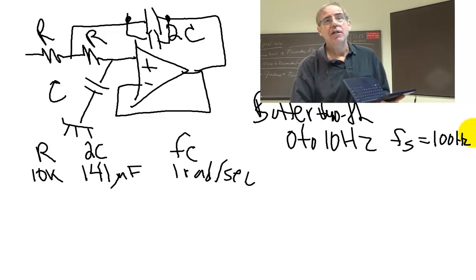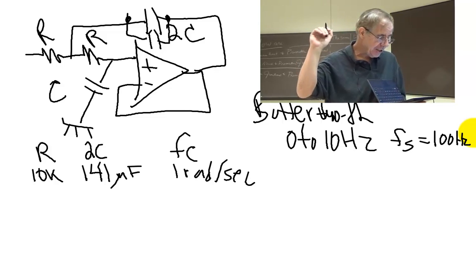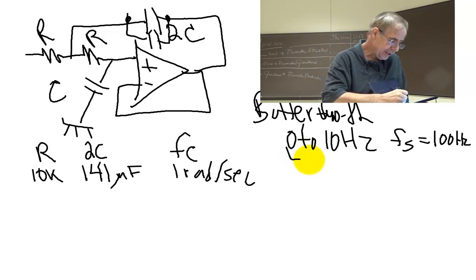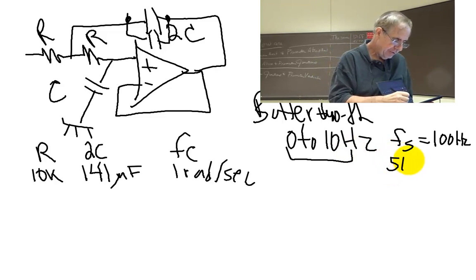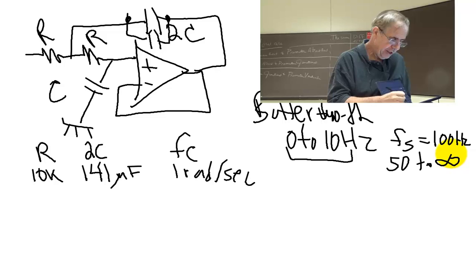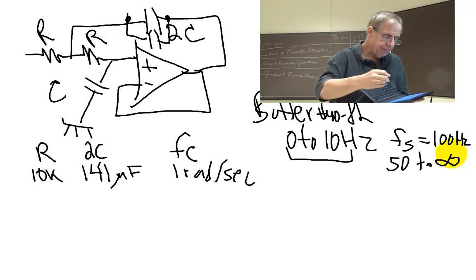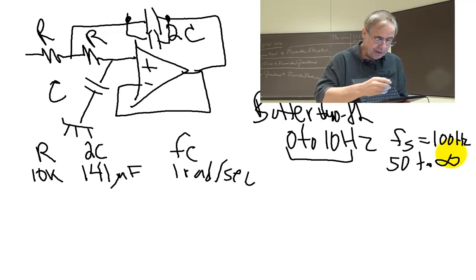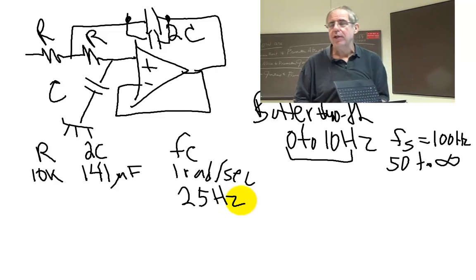I'm going to reject 0.5 fs, which is 50. I want to pass 0 to 10 and I want to reject 50 to infinity. That's my plan. So I'm going to choose a cutoff frequency of 25 hertz and hope it passes most of 0 to 10.